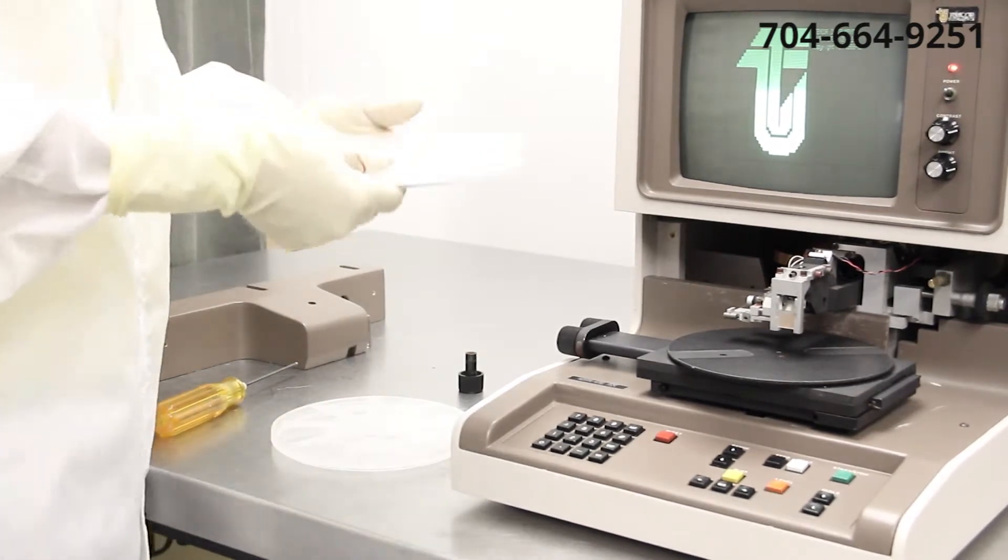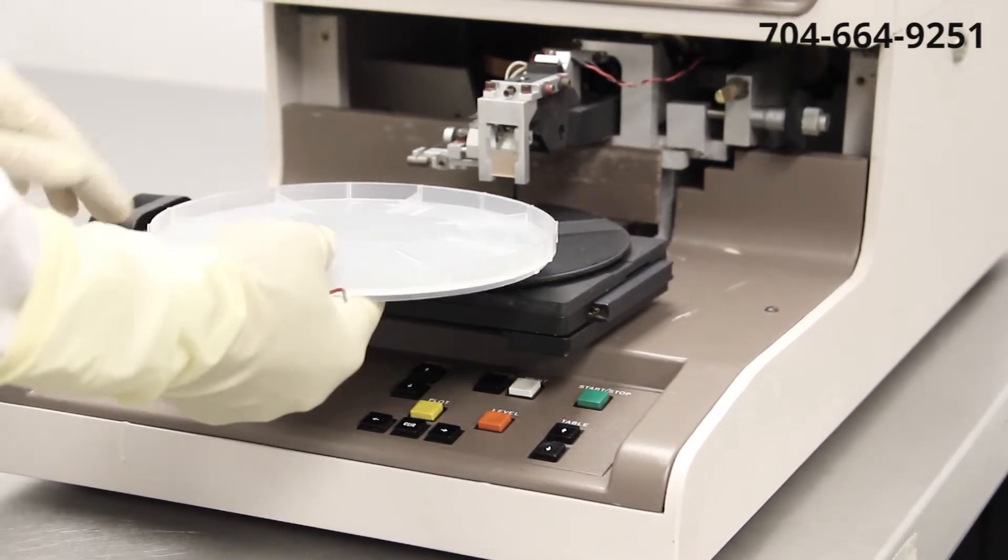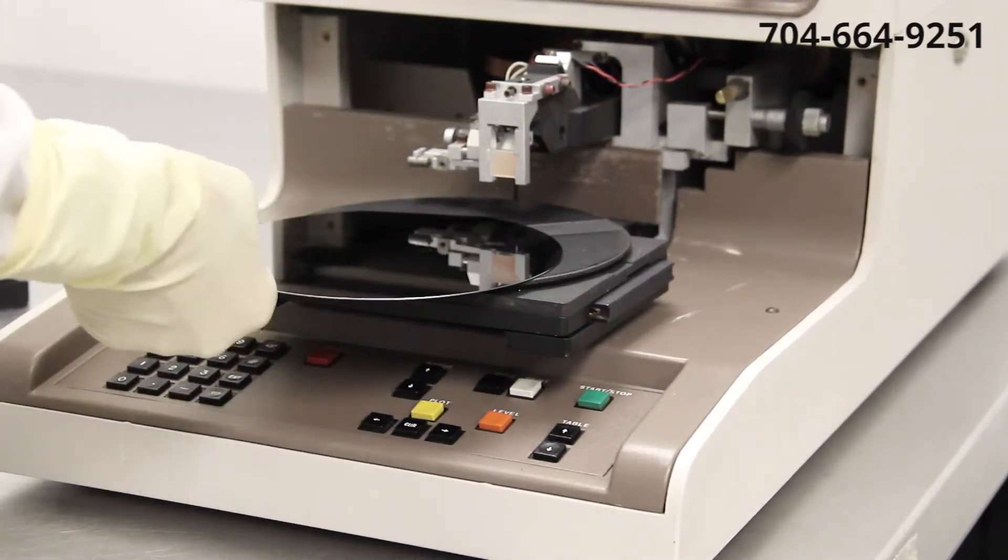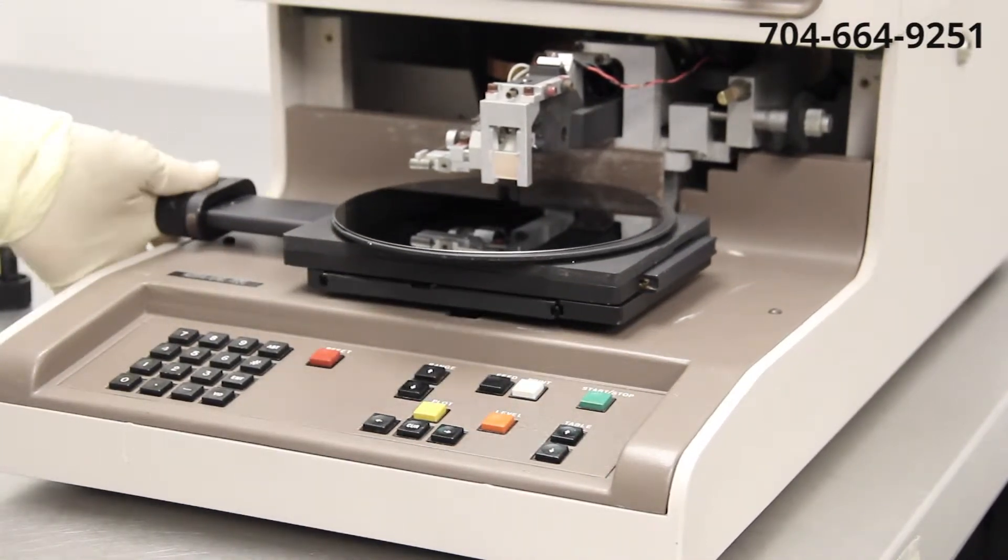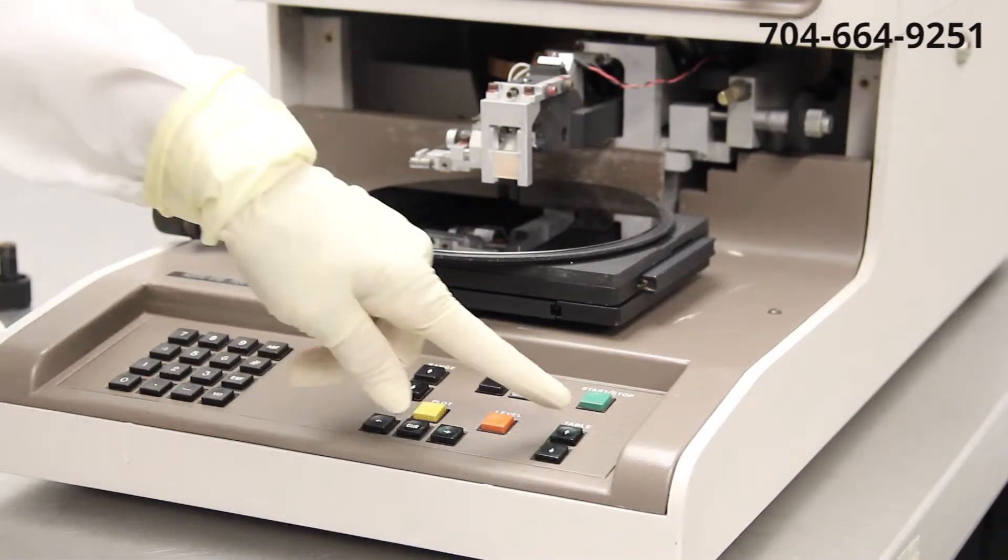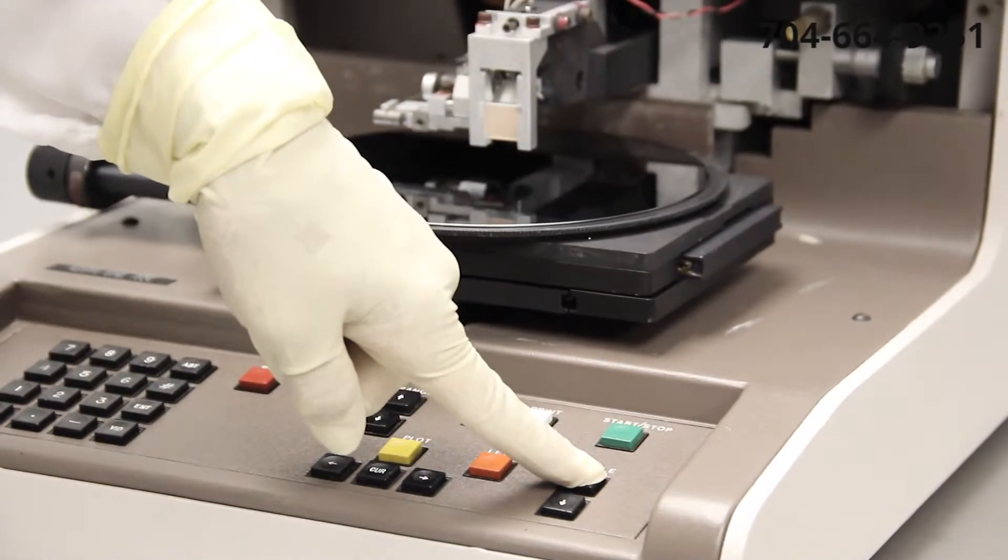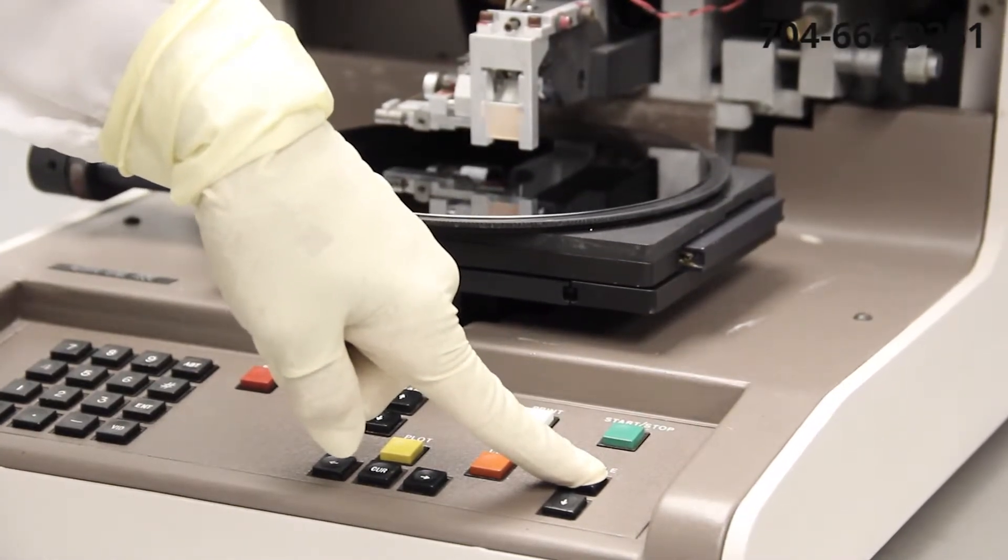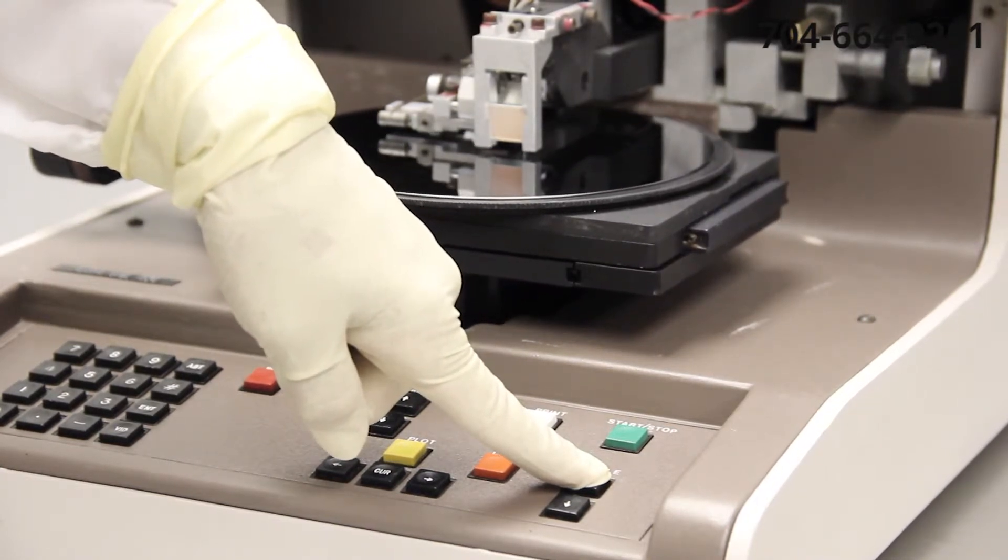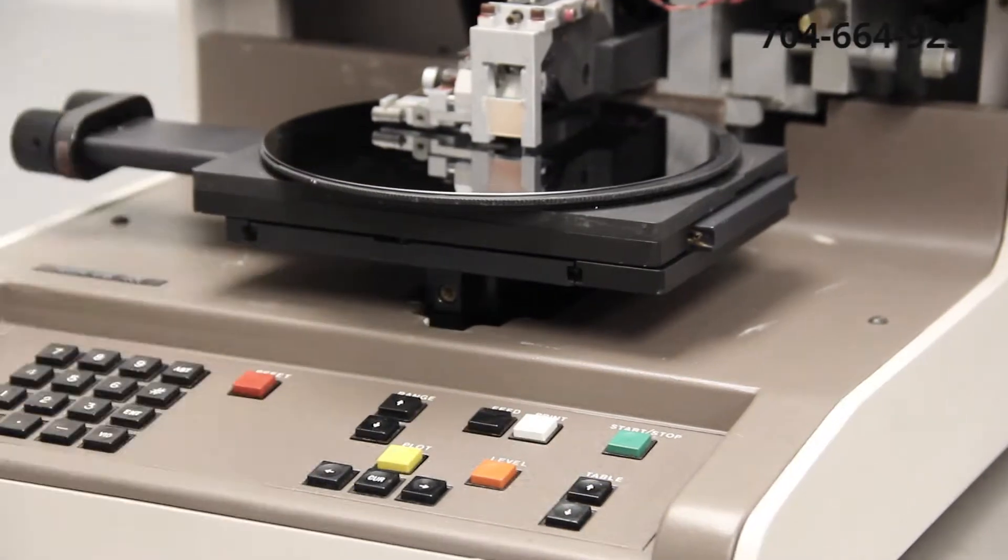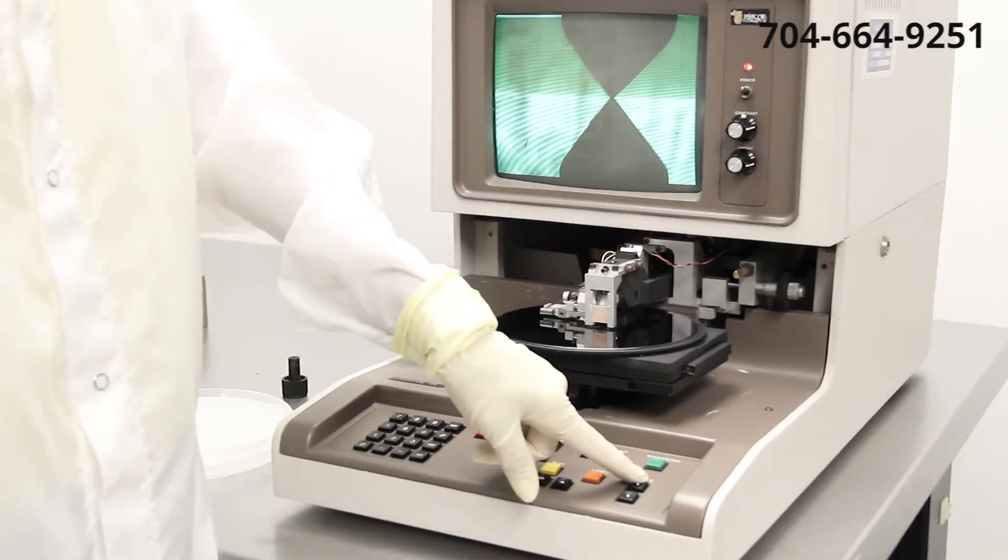I'm going to position the substrate so that it's directly underneath the stylus head tip. I'm going to press and hold the table up button. The stylus head will drop down to a null position and the table will rise. As soon as you can see that the stylus tip has made contact with the substrate and it's normal for it to retract automatically.